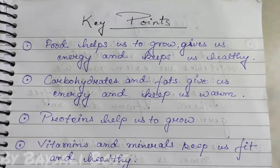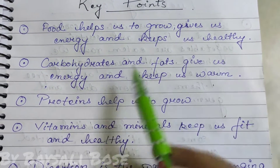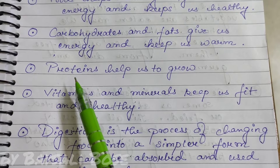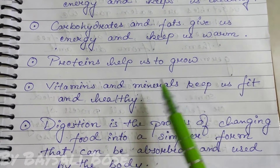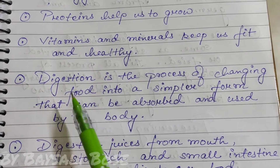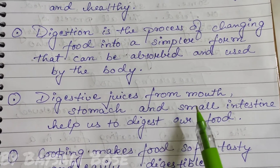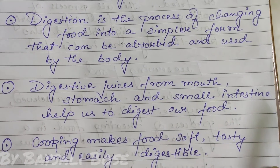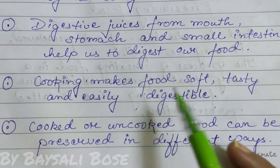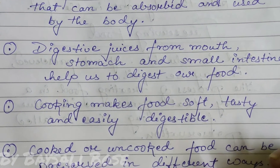Let's revise the whole chapter. Food helps us grow, gives us energy and keeps us healthy. Carbohydrates and fats give us energy and keep us warm. Proteins help us grow. Vitamins and minerals keep us fit and healthy. Digestion is a process of changing food into a simpler form that can be absorbed and used by the body. Digestive juices from the mouth, stomach and small intestine help us digest food. Cooking makes food soft, tasty and easily digestible. Cooked or uncooked food can be preserved in different ways.